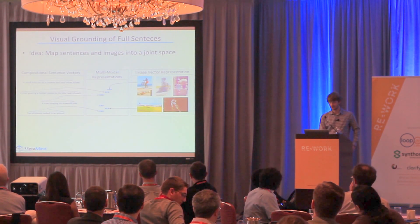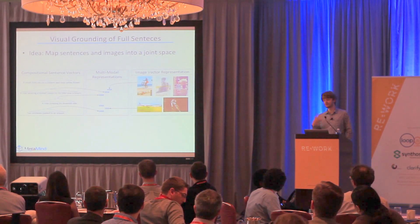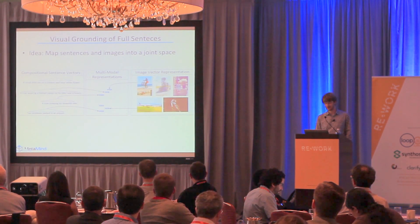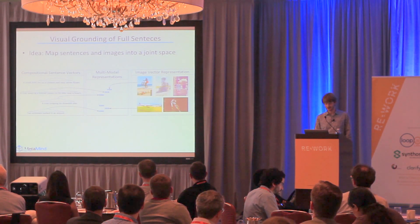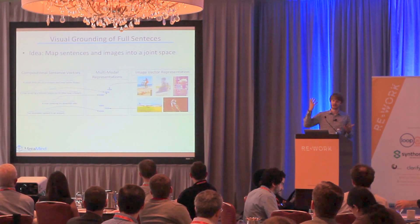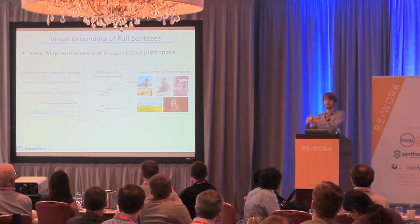We look at only the pixels of those images and map them using a convolutional neural network — the de facto standard in computer vision now. We use a convolutional neural network to map the images into vector space, and then we use a recursive neural network to map sentences describing those images into the same vector space. We then train the model such that sentences describing a specific image have a similar vector.